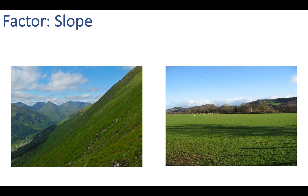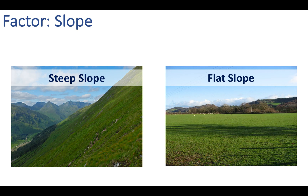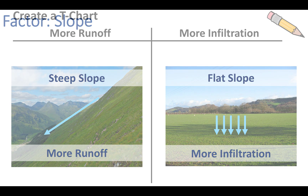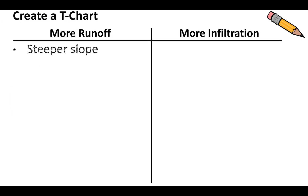The first factor is the slope of the land. On the left side of the screen there's a steep slope, and on the right side a flat slope. When rain hits a steep slope, that rain is going to just run off — it's not going to be able to go into the ground. Think of a really steep water slide. When rainwater hits a flat slope, there's enough time for the water to settle in and infiltrate the surface. So steep slope means more runoff; flat slope means more infiltration.